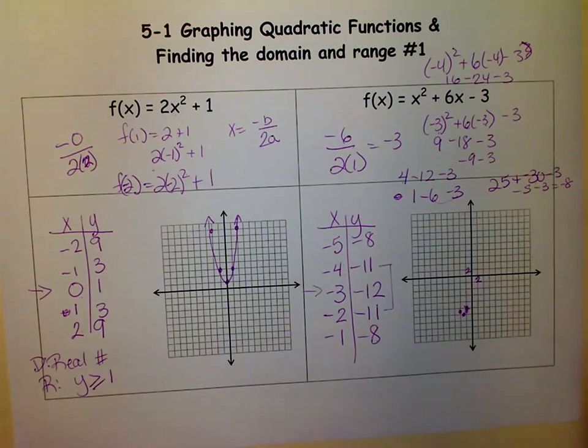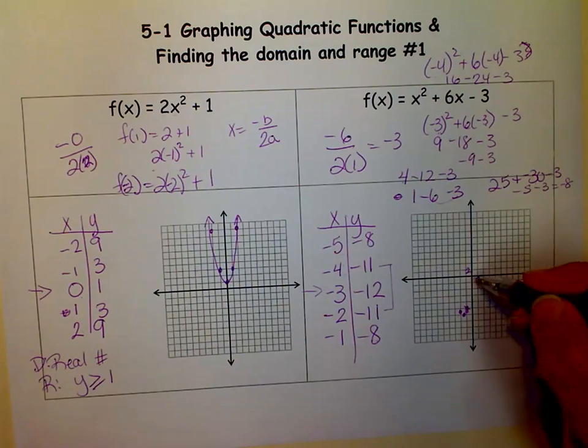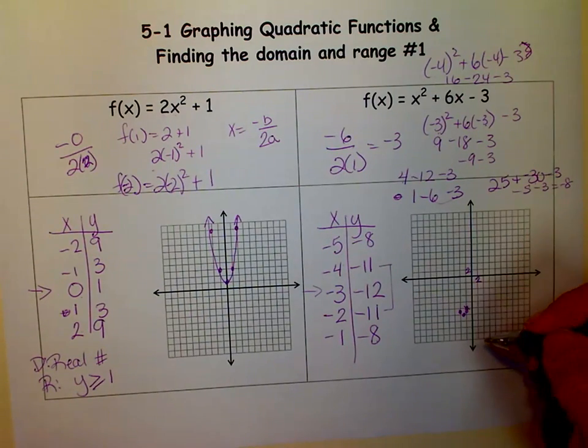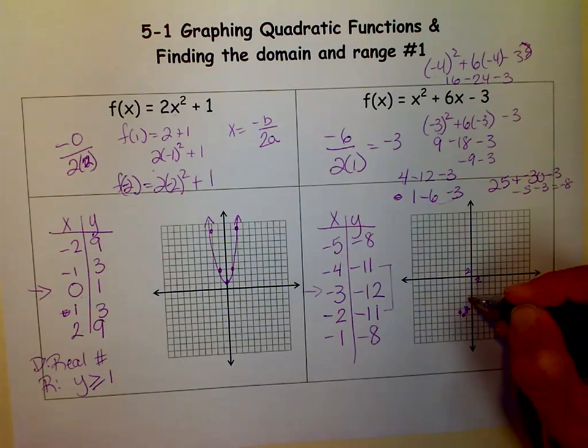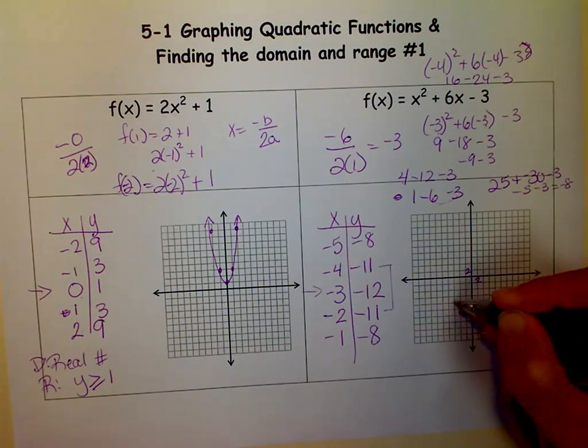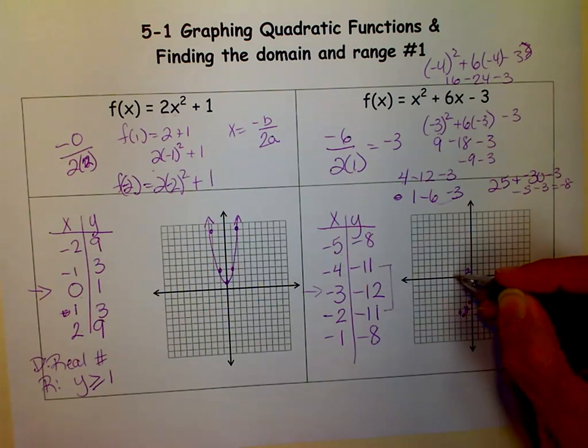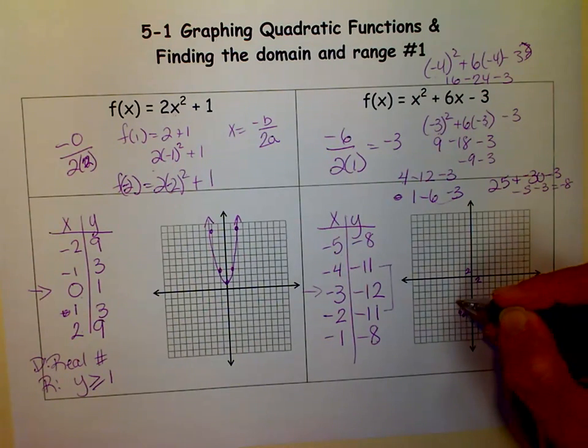And then if I graphed negative 4, 11, I would have gone over 4 and down 11. And then negative 1, negative 8. So 2, 4, 6, 8. And then over here, the same. 2, 4, 5, and then the 8.